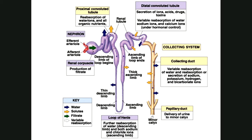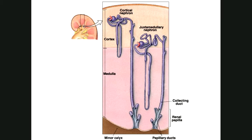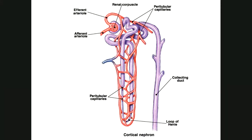Here are the paratubular capillaries. An afferent arteriole comes in, blood passes through the glomerulus, and an efferent arteriole comes out — which is unusual since this should normally be a venule. This creates a tiny portal system. The efferent arteriole wraps around and becomes the paratubular capillaries. These are where we either reabsorb good stuff back into the blood or take bad stuff out — secreting it through the peritubular fluid into the tubular fluid so it becomes urine.